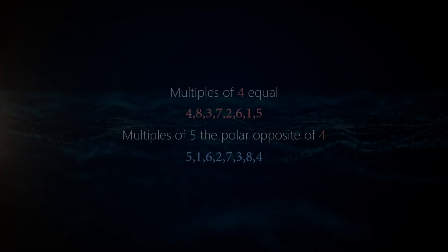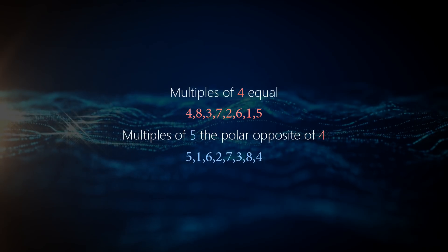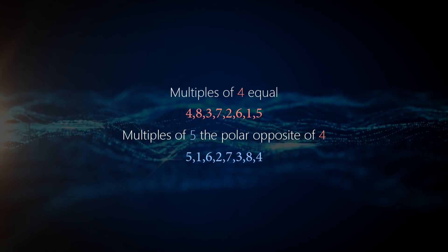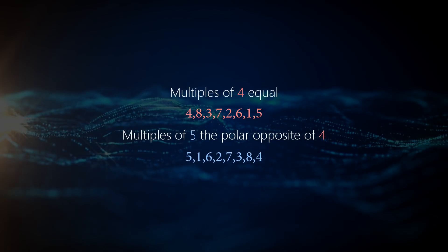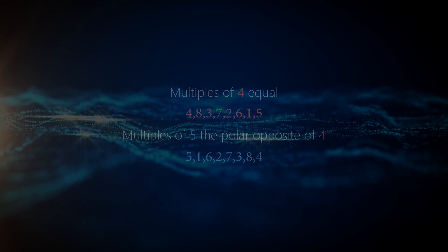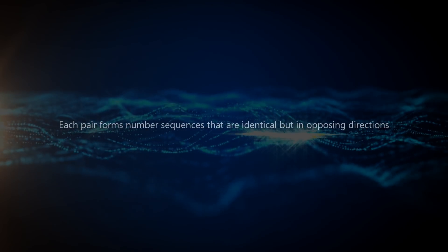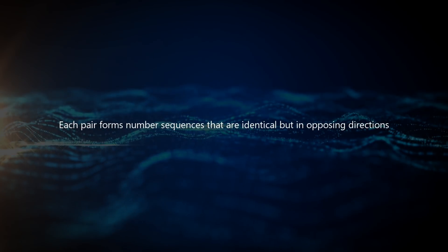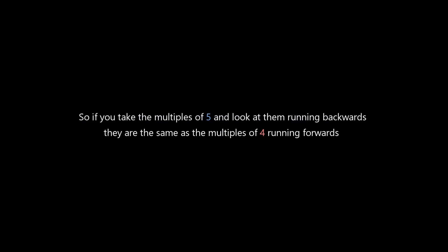So multiples of 4 equal 4, 8, 3, 7, 2, 6, 1, 5. And multiples of 5, the polar opposite of 4, are 5, 1, 6, 2, 7, 3, 8, 4. Each pair forms number sequences that are identical but in opposing directions. So if you take the multiples of 5 and look at them running backwards, they are the same as the multiples of 4 running forward.